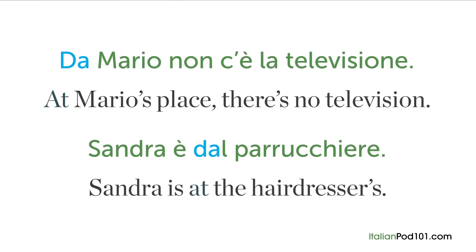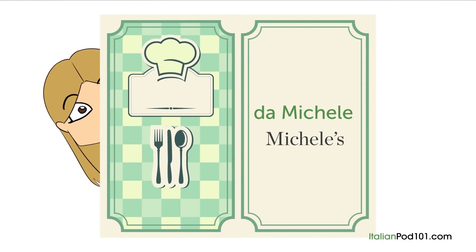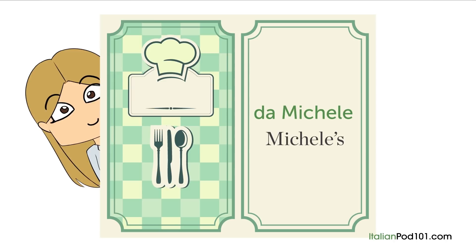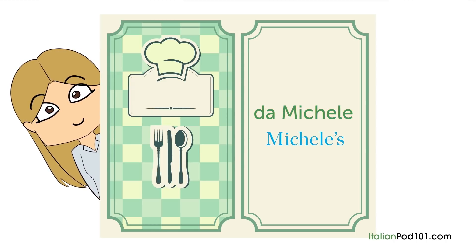DA also has the meaning of 'at' or 'to,' as in these examples: DA Mario non c'è la televisione — 'At Mario's place, there is no television.' Sandra è dal parrucchiere — 'Sandra is at the hairdresser's.' Many restaurant names also use this pattern, for example: DA Michele — 'Michele's.'